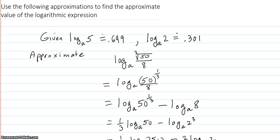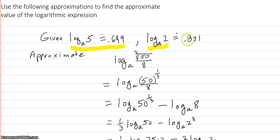Use the following approximations to find the approximate value of the logarithmic expression. We have log base A of 5 is approximately 0.699, and log base A of 2 is approximately 0.301.